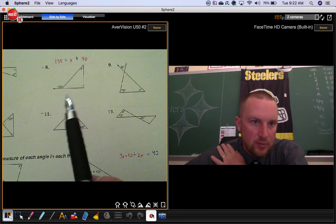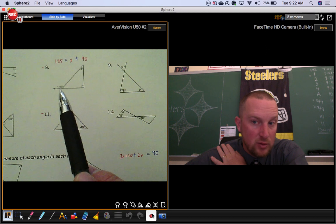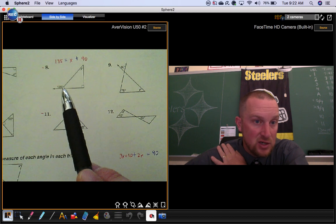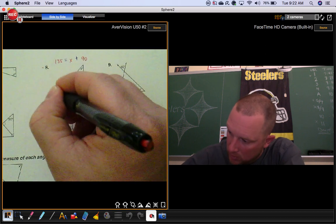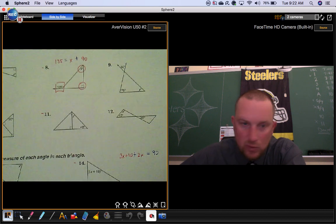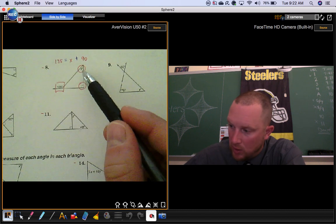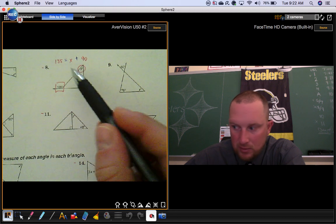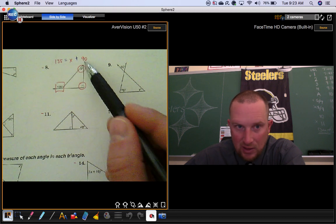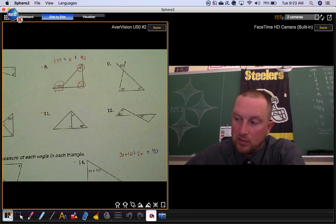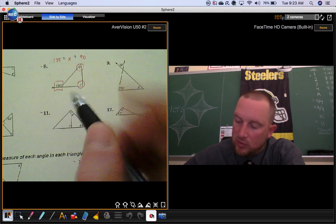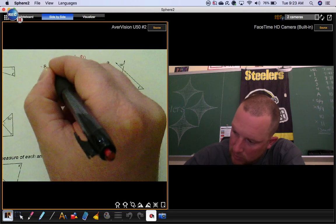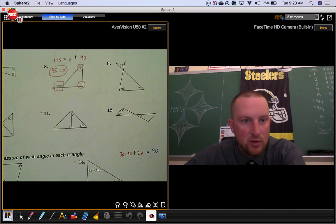Number eight, here's an exterior angle of a triangle. There's a theorem that says this exterior angle is the same thing. This one is the same thing as this one and this one added together. So a number plus 90, a number plus 90, equals that 135. Just subtract 90 from both sides. It's got to be 45.